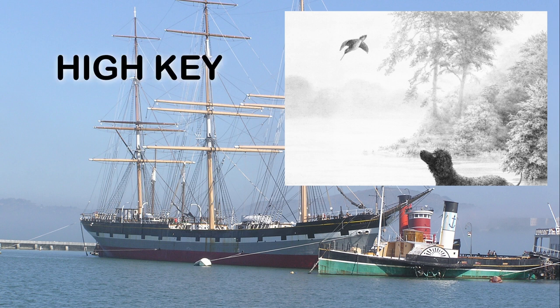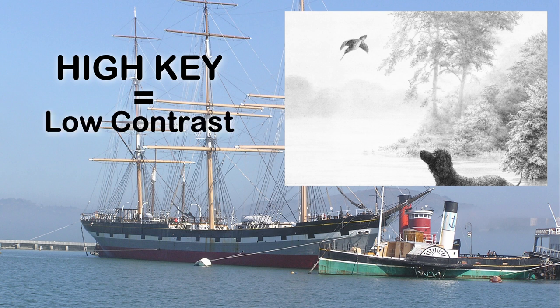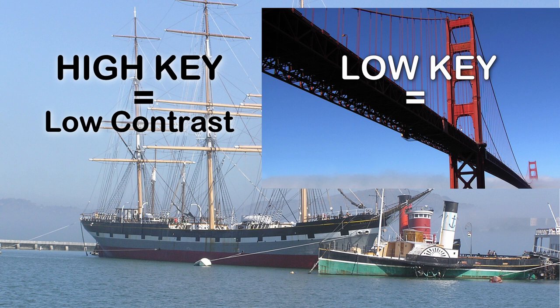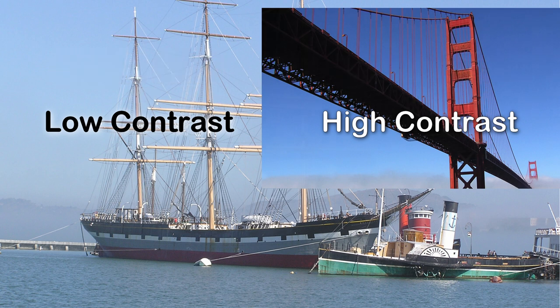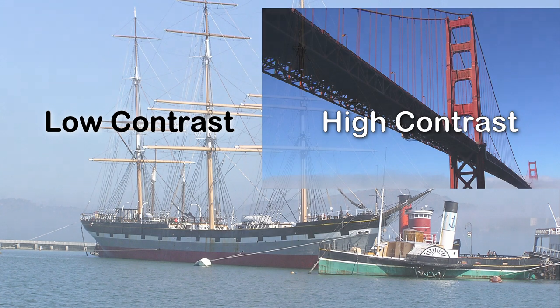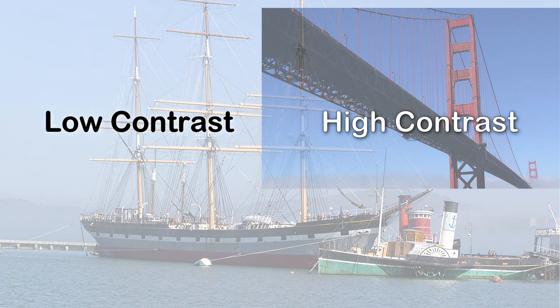So think of high key as full of light and low contrast, and low key as a low number of strong lights generating high contrast, and you won't go far wrong. Or as an artist you can think purely in terms of contrast and not mention key at all. But you do need to understand how lighting works.